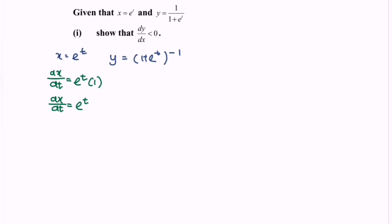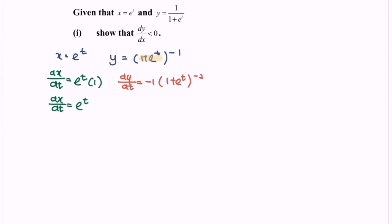Focus on the second part where we have y. dy/dt is equals to negative 1 bracket 1 plus e to the power of t to the power of negative 2. Differentiate the internal function and we will have 1 become 0.